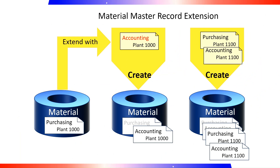Material master record extension: to maintain missing views or departments, we can use transaction code MM01. To change material master data, we can use transaction code MM02, where we can change already maintained views and organizational levels. To extend a material master from one plant to another plant, we can use transaction code MM01. Importantly, we can change material type by using transaction code MMAM.